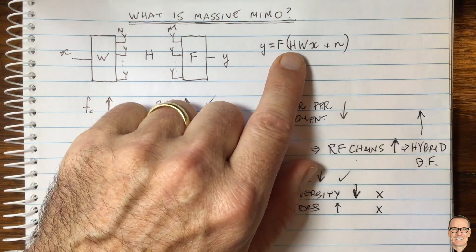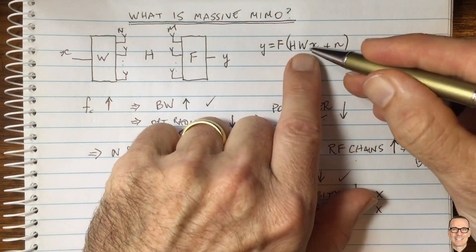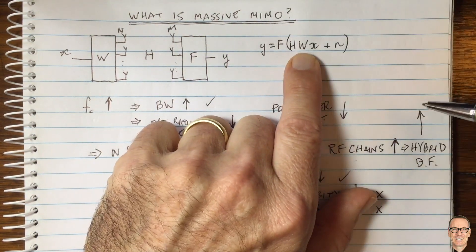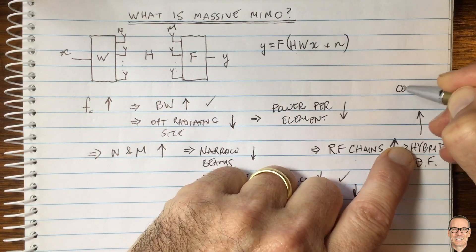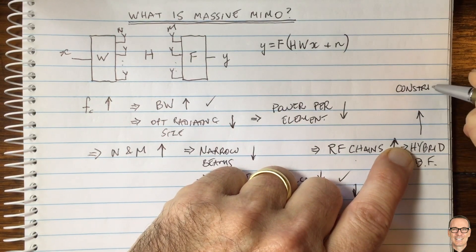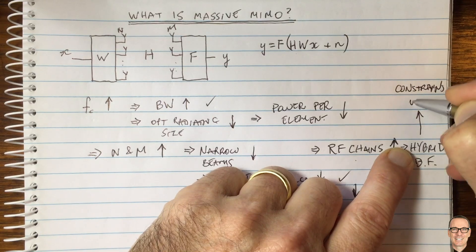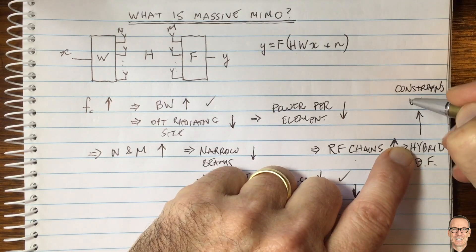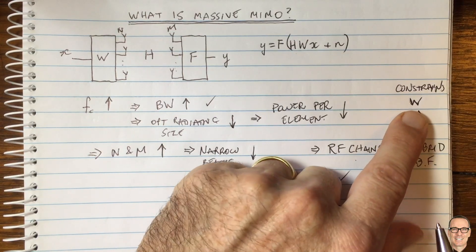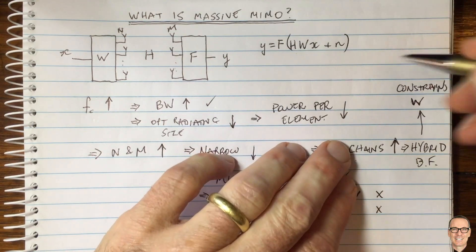What does this mean? In practice, this means you're going to have a constrained choice of W. It constrains the choice of W. Let's look at a picture here.